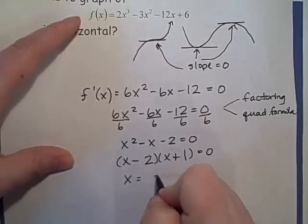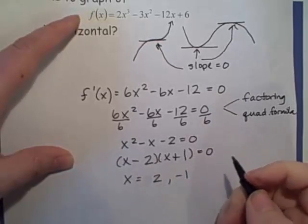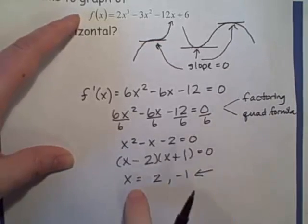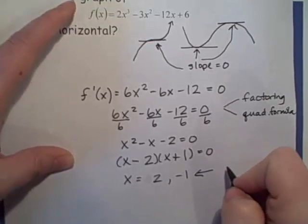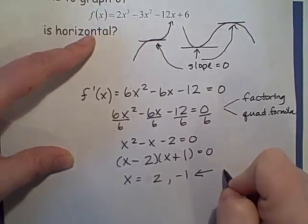So I have x equals 2 and x equals negative 1. So these are the two places, the two values of x, where the slope, the tangent line, is horizontal.